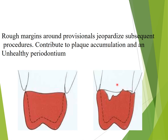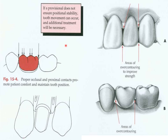As you can see in the photo, rough margins here jeopardize the procedure and create problems for the tooth surface underneath, contributing to plaque accumulation and resulting in unhealthy periodontium. If a provisional restoration does not ensure provisional stability, tooth movement can occur and additional treatment will be necessary. Proper occlusion and proximal contacts promote patient comfort and tooth position, so it should have proper occlusion and contact with the adjacent teeth.